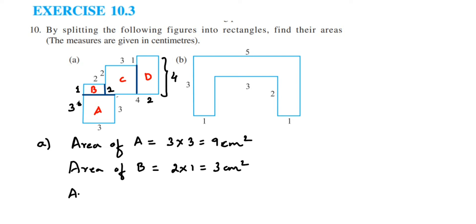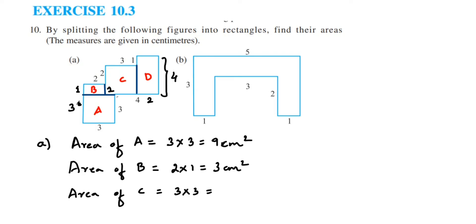Next is the area of C. C is also a square shape because we found this side is 3 and the other side is 2 plus 1, which equals 3. So 3 and 3 means it's a square. Area of square is side times side, which is 3 × 3 = 9 centimeters squared.